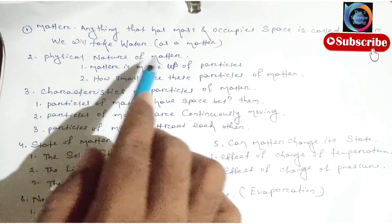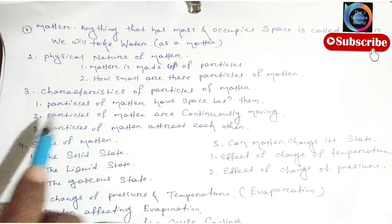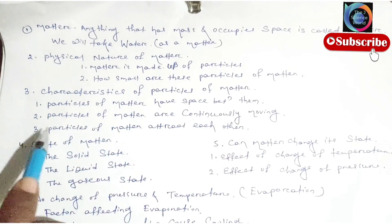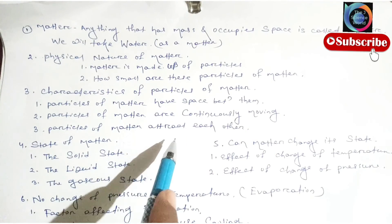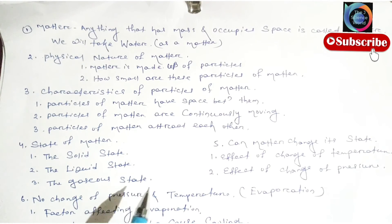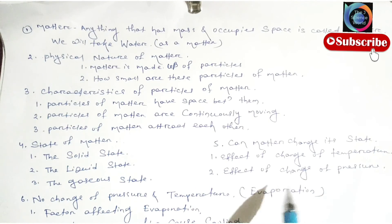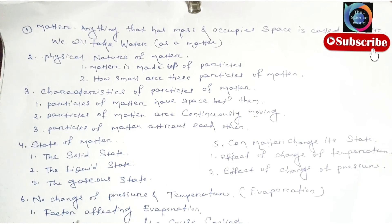This covers the six terms related to this topic: matter; physical nature of matter — matter is made of particles; how small are the particles; characteristics of particles of matter — particles have space between them, are continuously moving, and attract each other; states of matter — solid, liquid, gaseous, plasma, and Bose-Einstein condensation state; can matter change its state — effect of temperature and pressure; and sixth, evaporation — no change in pressure and temperature, including factors affecting evaporation and how evaporation causes cooling. This is all about matter in our surroundings.